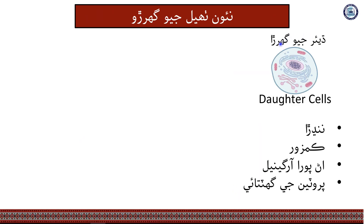That is, from one parent cell, daughter cells are produced. If the daughter cell is produced, it goes through further stages. The daughter cells are not smaller — they must grow and become complete before further division.